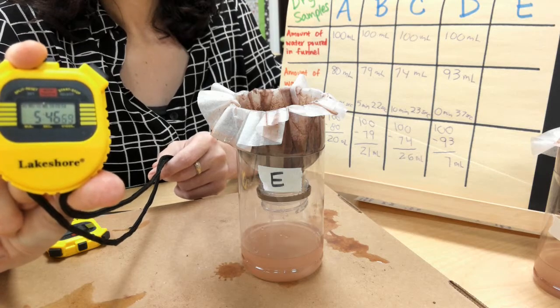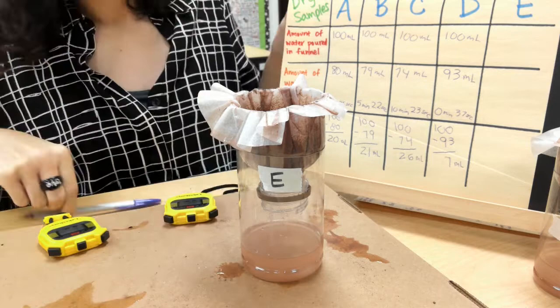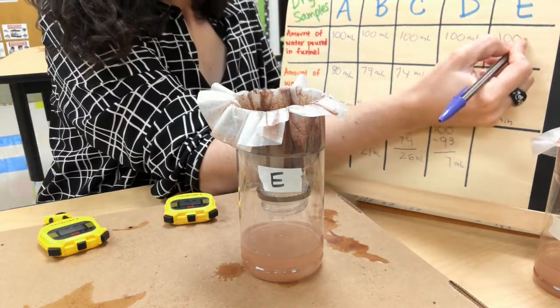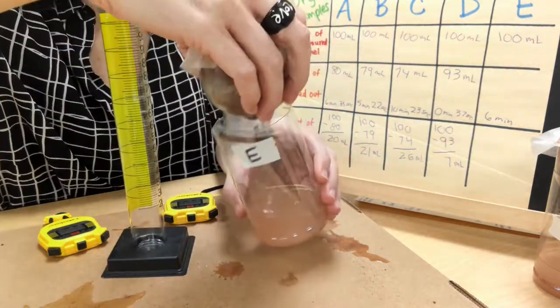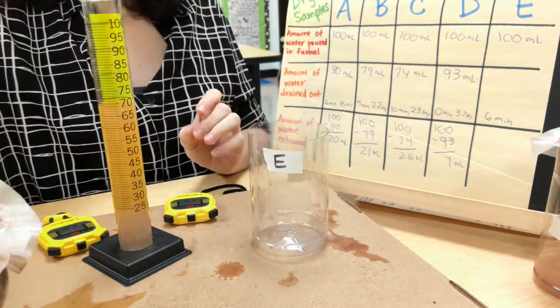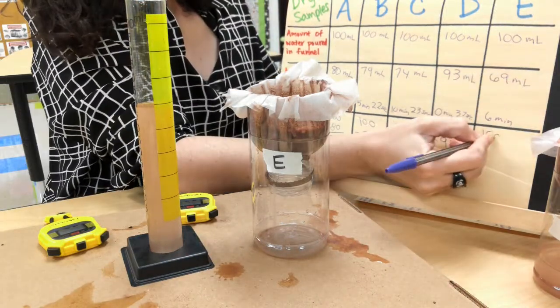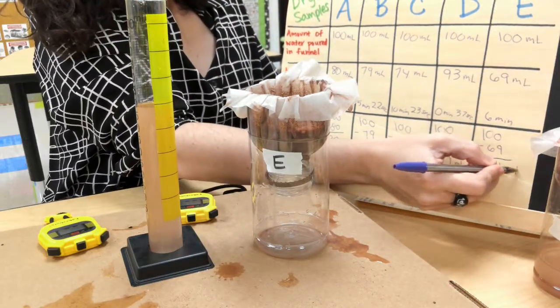Step 13. After you've recorded all the data entries for the dry and damp soils for all five soil samples, you can then complete some math calculations to figure out how much water was actually retained with each of the five samples.